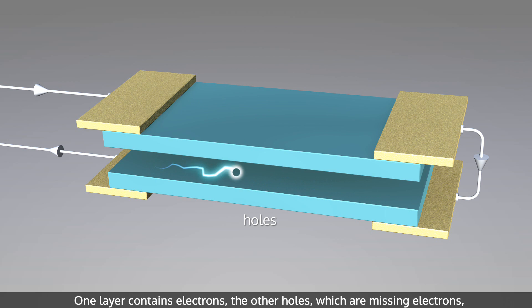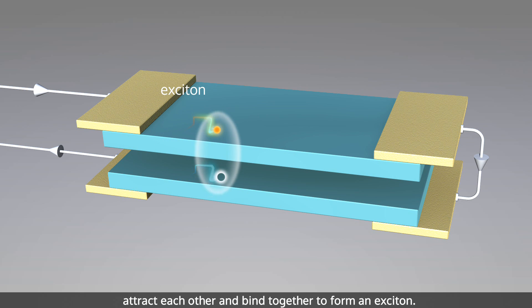Holes are missing electrons and act as positively charged particles. The negatively charged electrons and the positively charged holes attract each other and bind together to form an exciton.